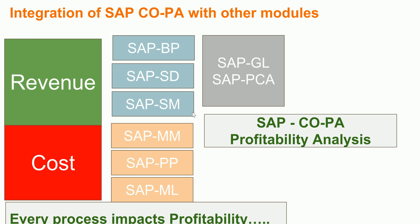You also have another segment reporting tool called PCA — Profit Center Accounting — which is a type of segment reporting rather than profitability analysis. Normally, along with the General Ledger you use PCA. In the General Ledger you have legal entities like company codes, and for non-legal entity financial reporting you use Profit Center Accounting.